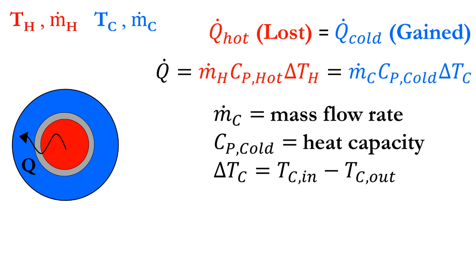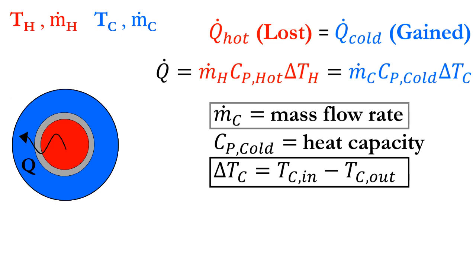Since Q must remain constant due to energy conservation, changing the flow rate must result in a corresponding change in the temperature difference between the inlet and outlet temperatures of the cold fluid.